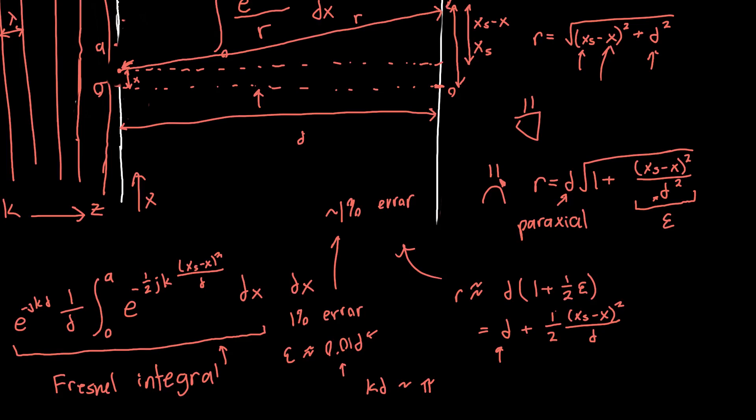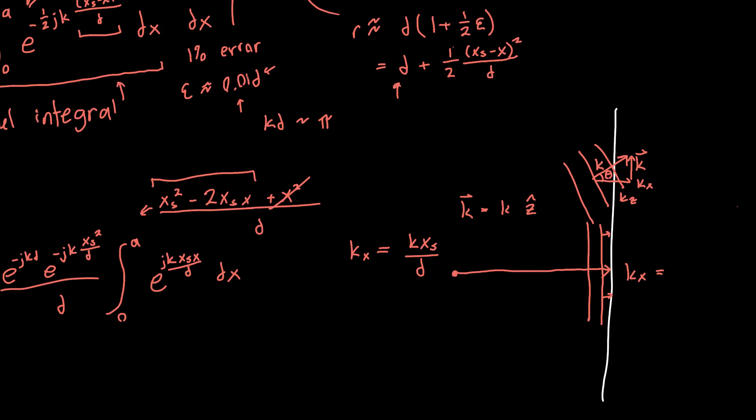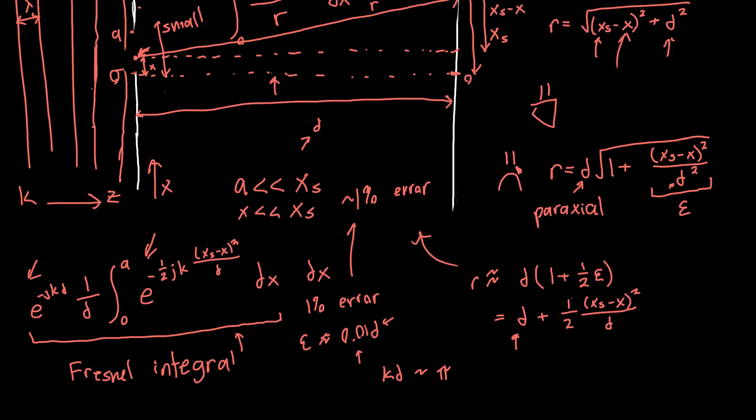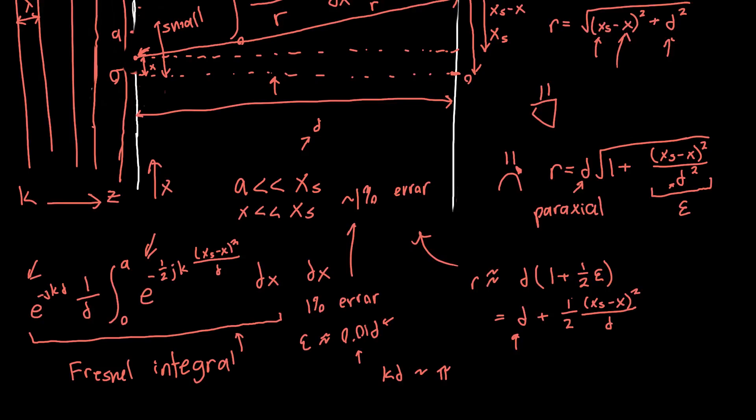And so you can use trigonometry to figure out what k_x is in terms of k. In this case, if we call this angle theta, k_x is just going to be what, k times sine of theta. So we're going to assume that the total slit distance a is much less than x_s, or our observation distance away from the screen. In other words, x is much less than x_s, because x is always going to be less than a for this, for this integral to work out.